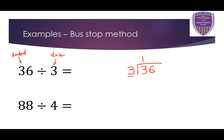There are no remainders, so we can move on to the next bit. How many 3s are in 6? I know there are two 3s in 6, and because there are no remainders, that's my final answer. So, 36 divided by 3 is equal to 12.